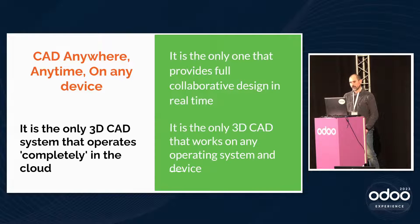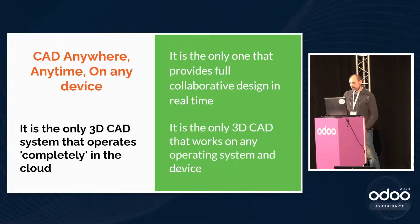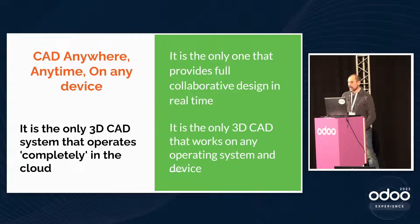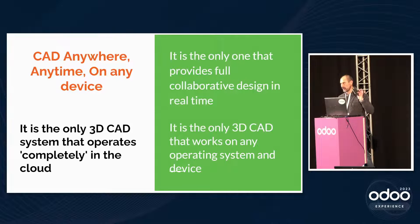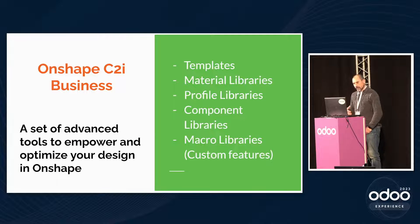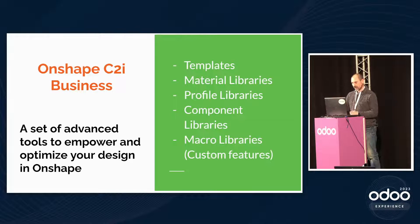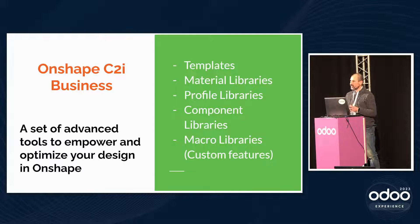That's not possible with a traditional CAD system with file management. It's also the only one that works on any operating system and device. Onshape works on Linux, Mac, and Windows, and it works on iPad. The iPad and Android application is a full design CAD system on your mobile. That brings a lot of possibilities. We are partners of Onshape and provide our customers with templates, material libraries, expanded material libraries, profile libraries with more than 3,000 entries, component libraries, and custom features — very specific features for specific needs.